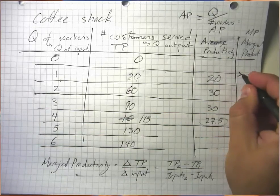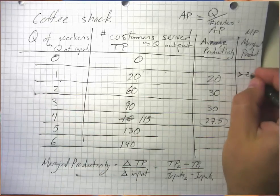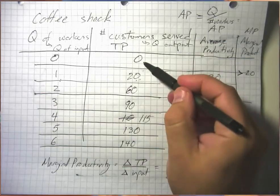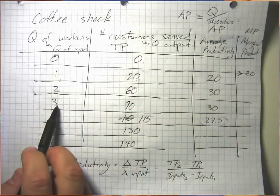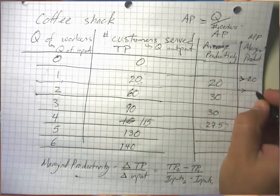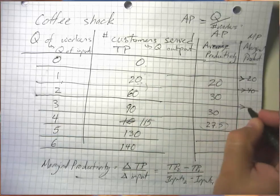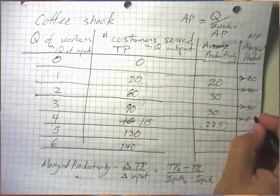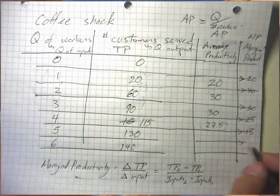Marginal productivity for each transition: going from zero to one worker, MP = 20. From one to two, MP = 40. From two to three, MP = 30. From three to four, MP = 25. From four to five, MP = 15. From five to six, MP = 10. Since each step adds one worker, the change in inputs is always one, making the calculation straightforward.